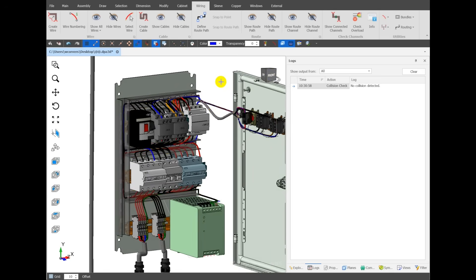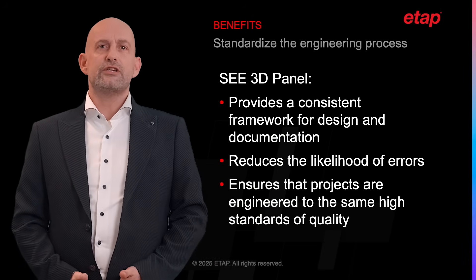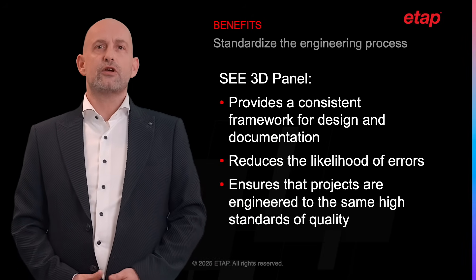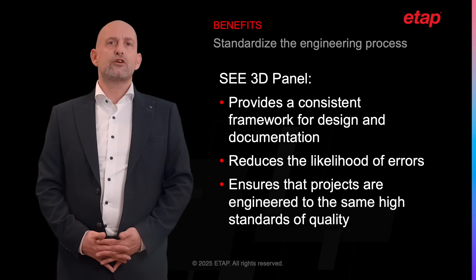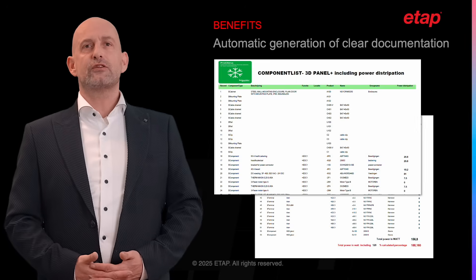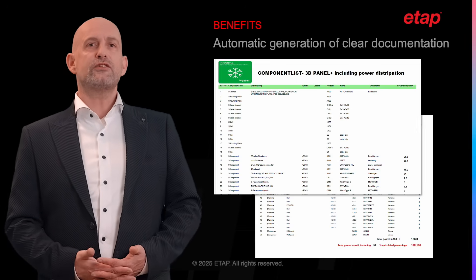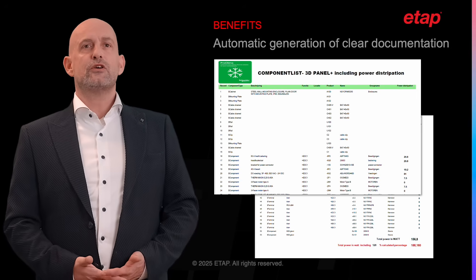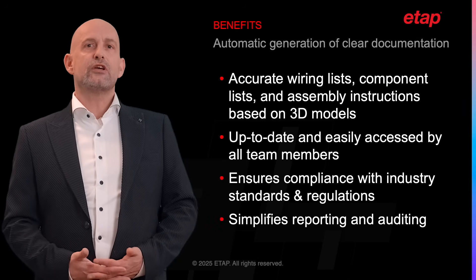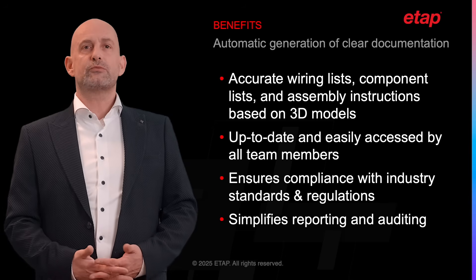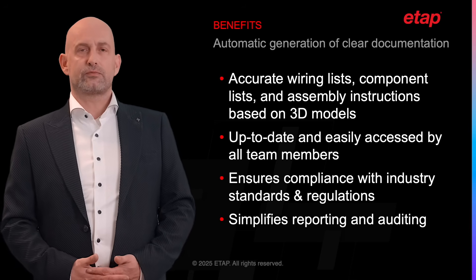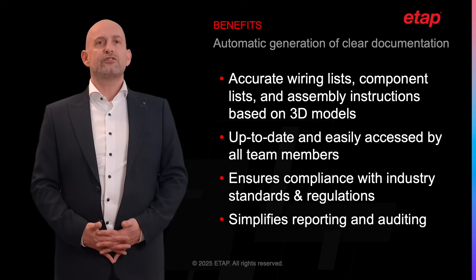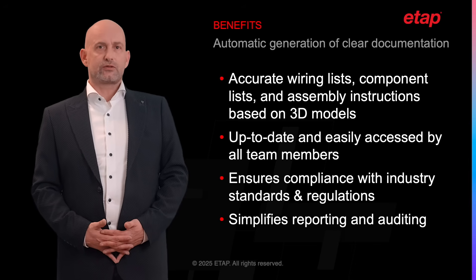This proactive approach to error management leads to higher quality outcomes and reduces the need for rework. C3D Panel helps standardize the engineering process by providing a consistent framework for design and documentation. This standardization reduces the likelihood of errors and ensures that all projects are engineered to the same high standards of quality. C3D Panel automatically generates comprehensive documentation based on the 3D models, including a wiring list, component list and assembly instructions. This documentation is accurate, always up-to-date and easily accessible to all team members, improving collaboration and reducing the risk of miscommunication and errors.